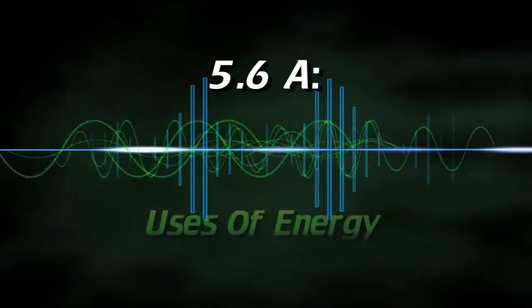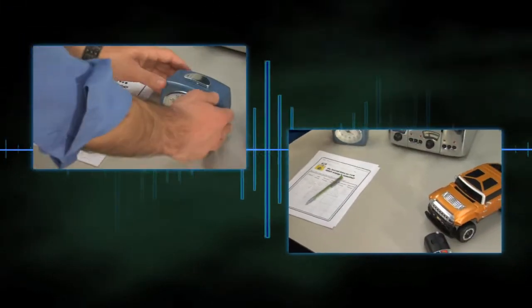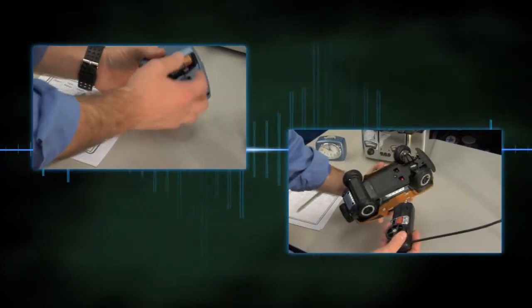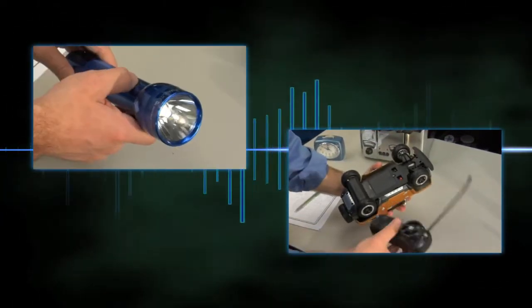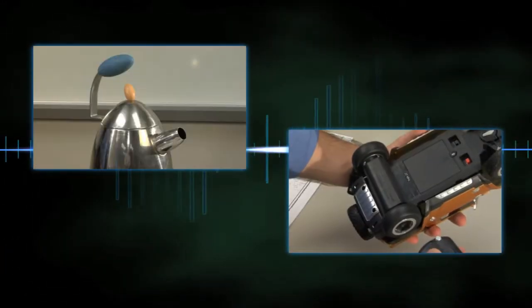5.6a Uses of Energy. In this activity, students investigate ways various machines and appliances use or produce different forms of energy, including mechanical, light, thermal, electrical, and sound.